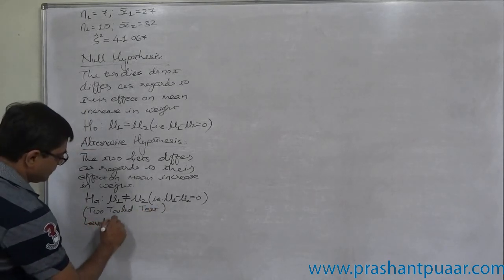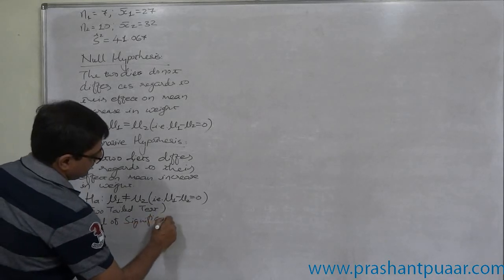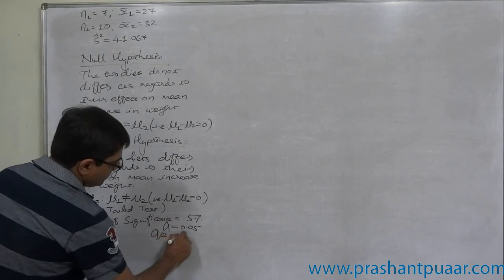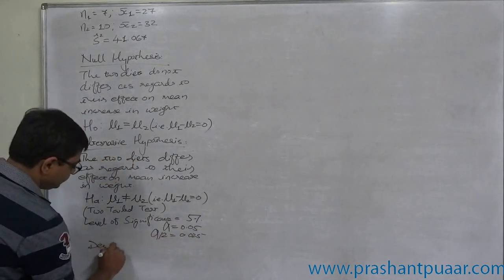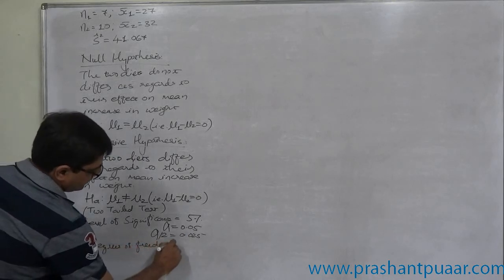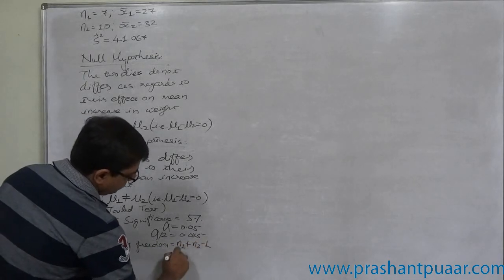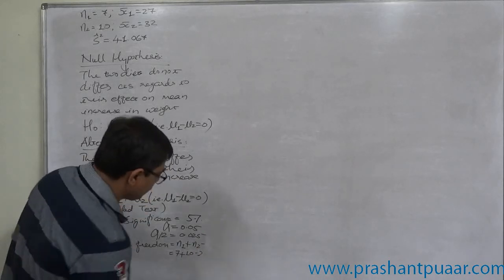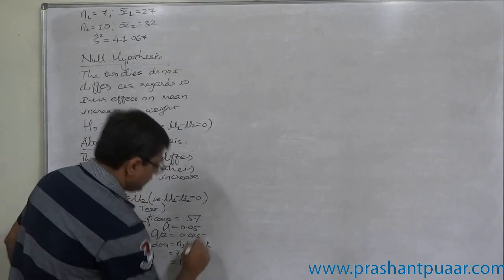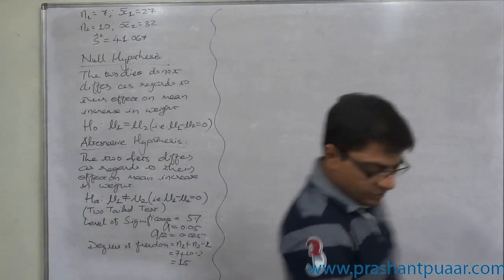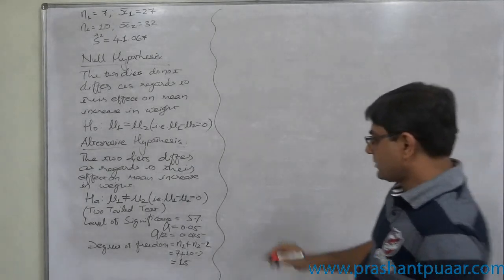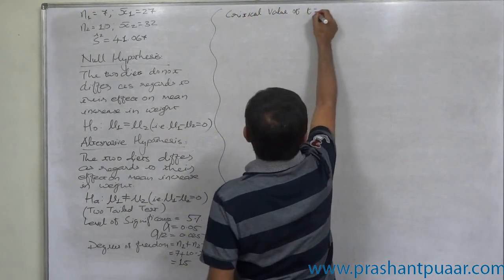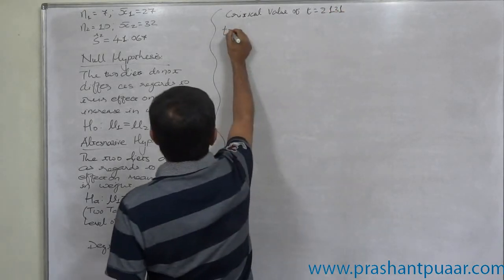Level of significance α is 0.05, α/2 must be 0.025. Degrees of freedom: n₁ + n₂ - 2 = 7 + 10 - 2 = 15. It is nothing but summation of n₁ - 1 and n₂ - 1. So for ν = 15 and α/2 = 0.025, the critical value of t equals 2.131.